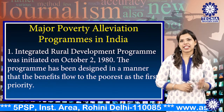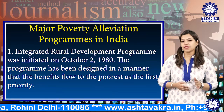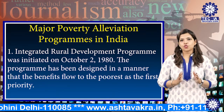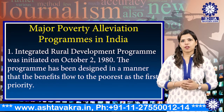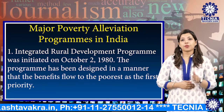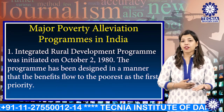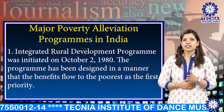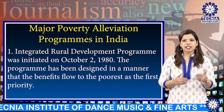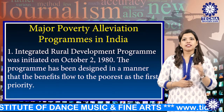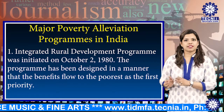The Integrated Rural Development Program was initiated on October 2, 1980. The program has been designed in a manner that the benefits flow to the poorest as the first priority. The smallest farmers get a subsidy of 25% of the capital cost, while the marginal farmers' share is 33%. The landless laborers and rural workers are entitled to a 50% subsidy for actual assets.